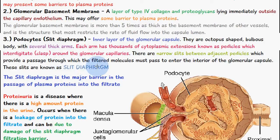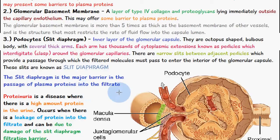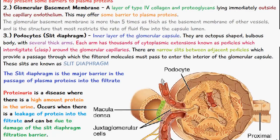In between adjacent pedicles there are narrow slits which provide a passage through which filtered molecules must pass to enter the interior of the glomerular capsule. These slits are known as the slit diaphragm, and this is where filtration actually occurs — in between the pedicles of the podocytes. The slit diaphragm is the major barrier preventing plasma proteins from passing into the filtrate.